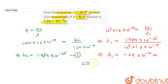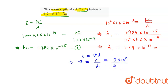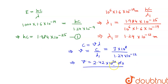So from here we can calculate the frequency. Frequency = c / λ₁. Substituting the values: (3 × 10⁸) / (1.24 × 10⁻¹²). After simplifying, frequency = 2.42 × 10²⁰ Hz. So the frequency is equal to 2.42 × 10²⁰ hertz.